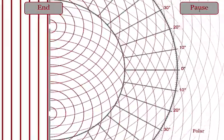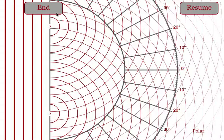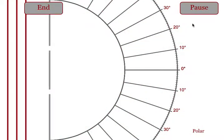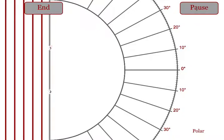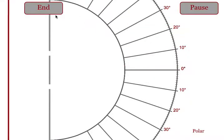Once students pinpoint the location of the constructive interference, they can then hit end and see how the size of the gap affects that angle. They can do a few different gap sizes and see how the gap size and the angle are related.